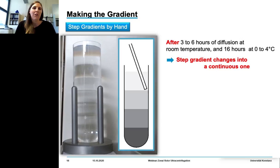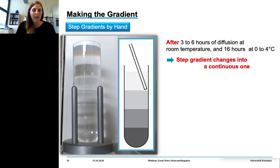We can receive a continuous gradient — eventually a linear gradient — by allowing the gradient to diffuse, but this procedure takes quite a long time. We use this method only if our solution at the bottom is really highly concentrated and therefore extremely viscous — in our case, 55 weight percent.